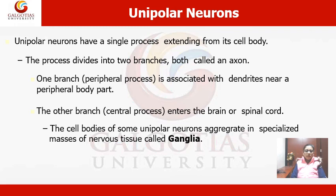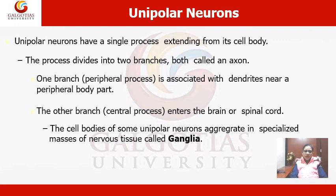The second type in the structural classification is unipolar neurons. Unipolar neurons have a single process extending from the cell body — meaning only a single projection from the cell body. This process is divided into branches: one branch, called the peripheral process, functions as dendrites near a peripheral body part, and the other central branch enters the brain or spinal cord. The cell bodies of these unipolar neurons aggregate in masses of nervous tissue called ganglia.